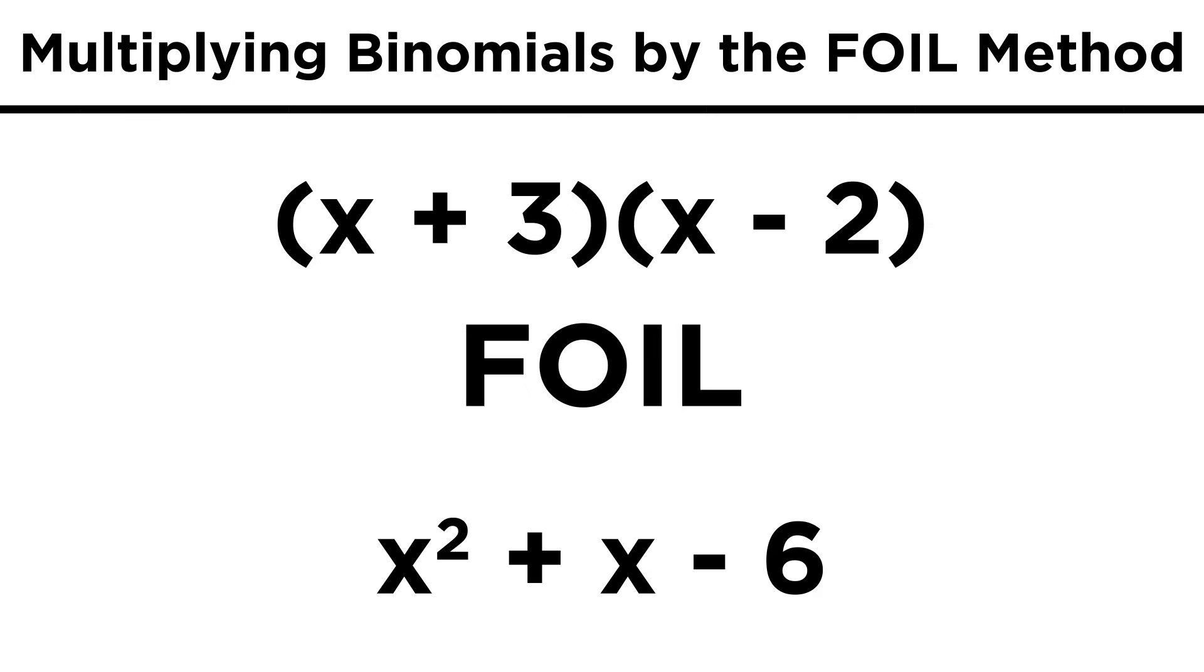Again, the reason this works is because it's as though we are distributing each term of one binomial across the other binomial, and the FOIL method just ensures that we do it the same way every time, so that we don't make a mistake.